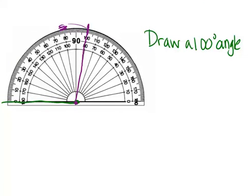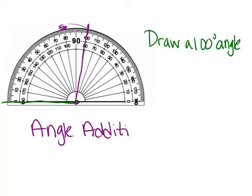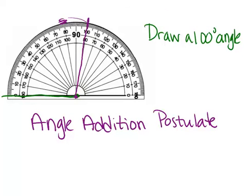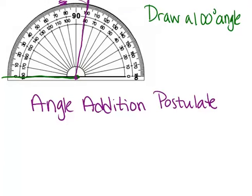And the last thing that I want to talk about is something called the angle addition postulate, which is the idea that if you have two angles that are combined, then the angle that they create, that is the combination of both angles together, will have a measure that's the sum of the original angle measures. So let's look at an example.